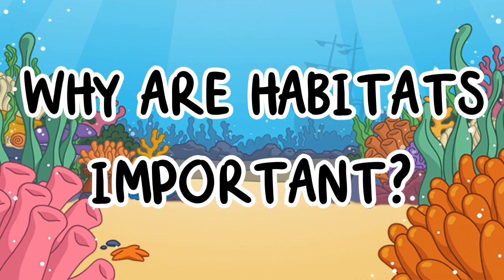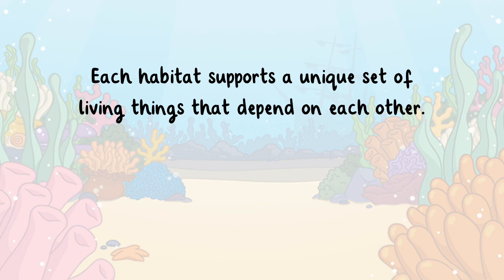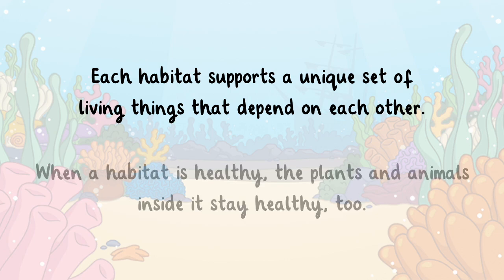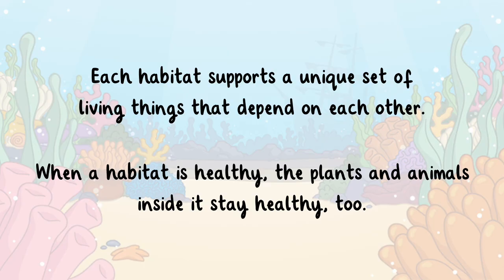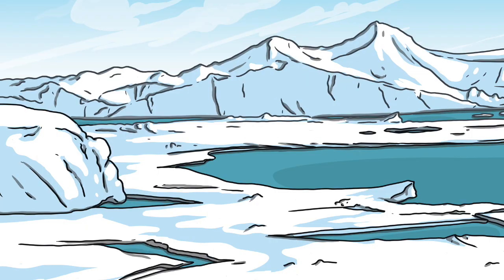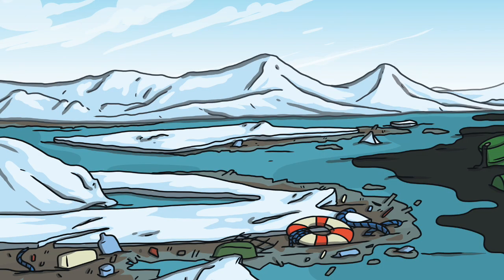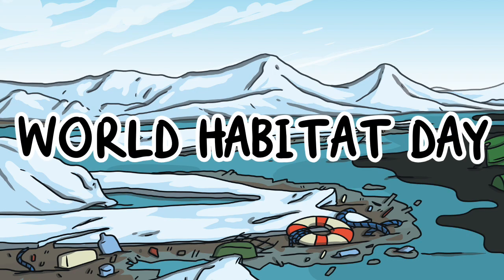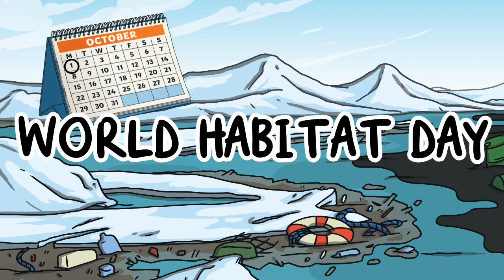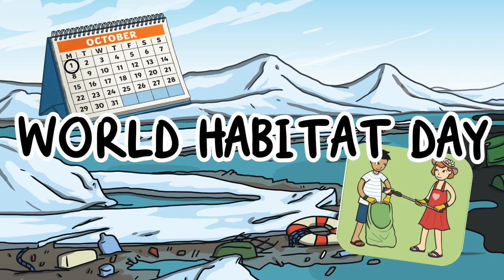Each habitat supports a unique set of living things that depend on each other. When a habitat is healthy, the plants and animals inside it stay healthy too. But when habitats are destroyed or polluted, many animals lose their homes. That's why it's important to protect them. World Habitat Day is celebrated on the first Monday of October. It reminds us to take care of the places where people, animals, and plants live. By protecting habitats, we help nature stay in balance and we help our planet.